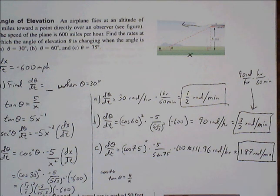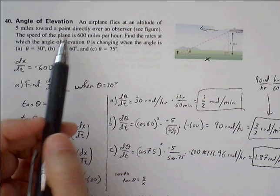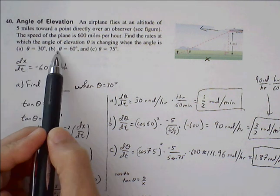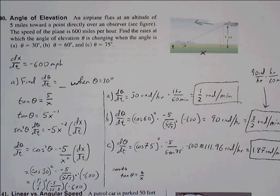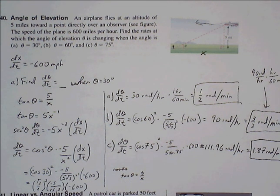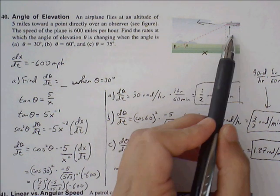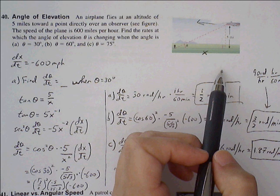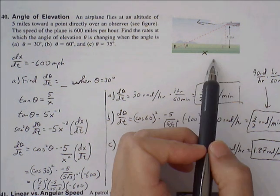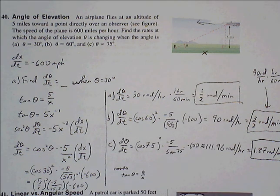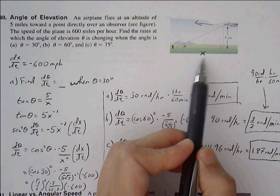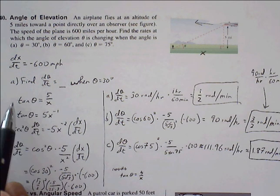Part a: Find dθ/dt when theta is 30 degrees. Looking at what we're given, we have to start off with an equation that relates the three variables together. We have to use trig equations since we're involving theta. The only one that doesn't involve the hypotenuse is going to be tangent. So tangent theta equals 5 over x. That's our starting point.